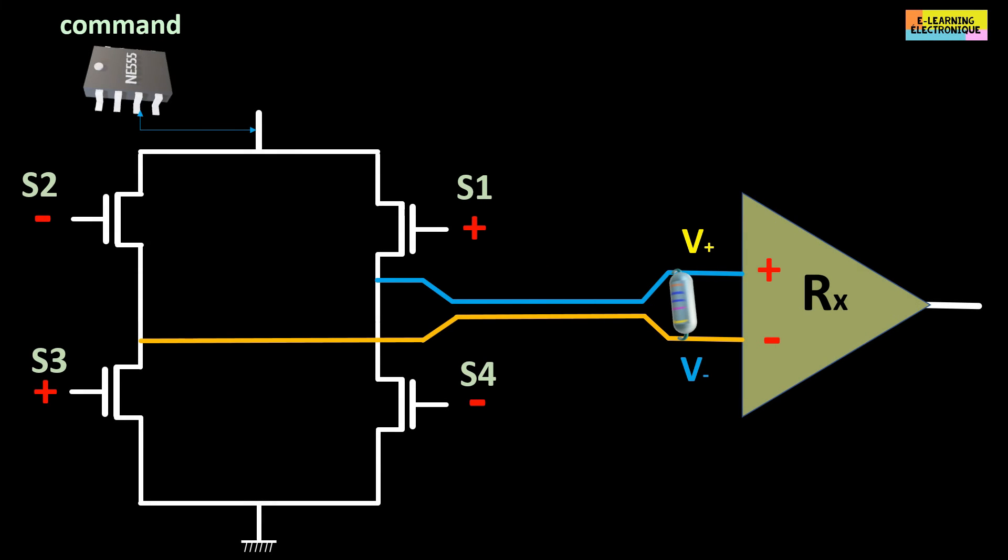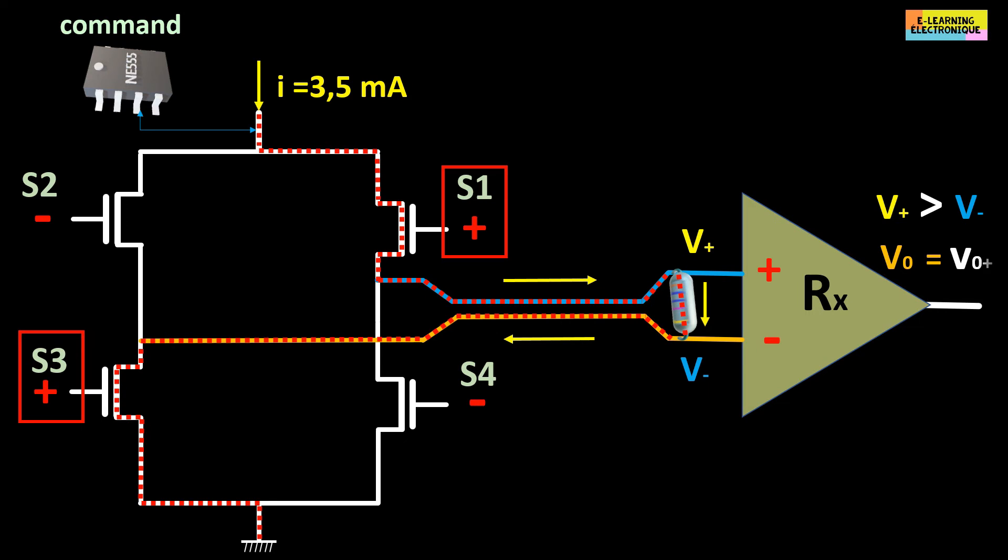When MOSFETs S1 and S3 are activated simultaneously, and S2 and S4 remain open, a positive current flows through the load. Remember that the current I does not flow through the opamp because of its high impedance at its input. The current will flow back through the 100 ohm resistor. The output voltage VO will be positive equivalent to VO+.